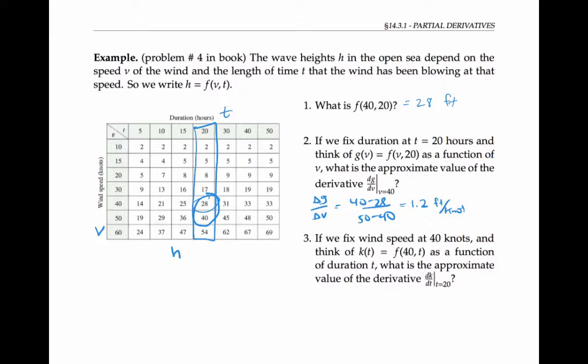If instead, we look at v values just less than 40, then we're looking at these two numbers. And we can calculate delta g delta v as 28 minus 17 over 40 minus 30, which gives us 1.1 feet per knot. The average of these two numbers is 1.15 feet per knot.